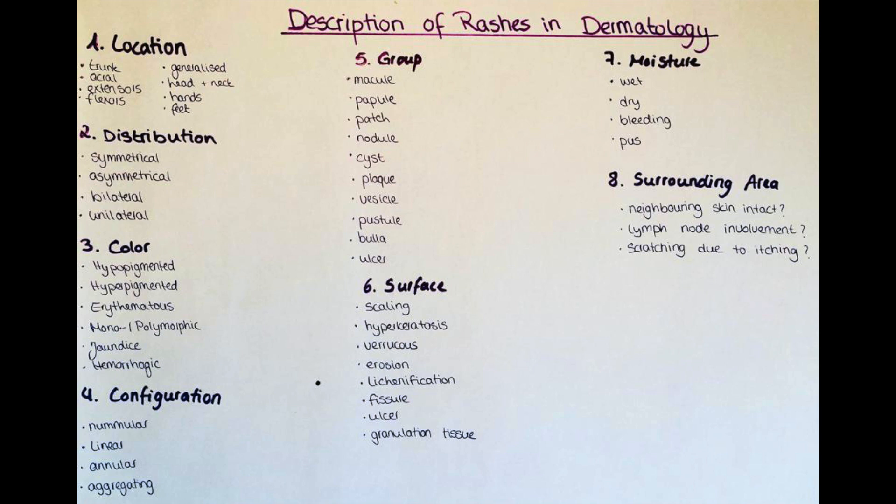In the seventh step we describe the moisture of the affected skin. Generally the skin can be either wet or dry depending on the lesion. If it is wet we can further differentiate if the fluid is serous, like pus, or maybe hemorrhagic.